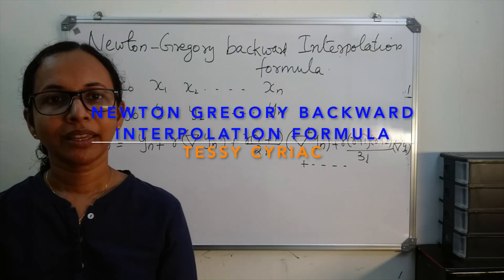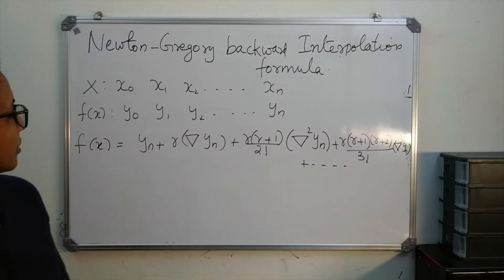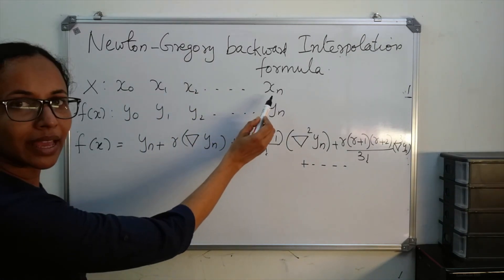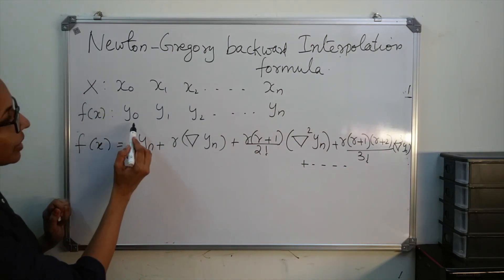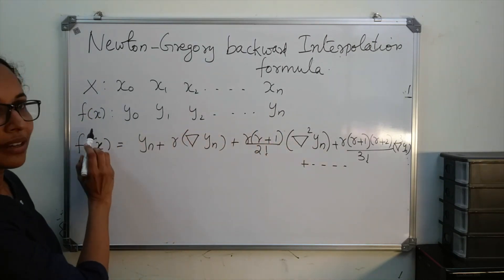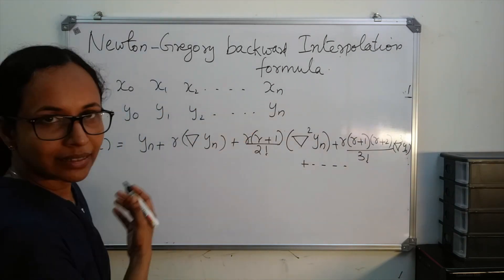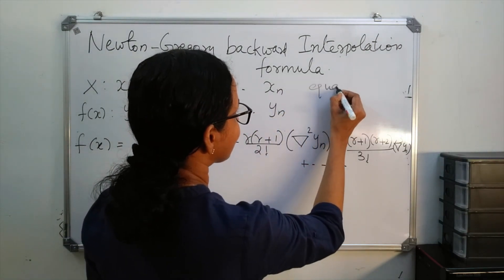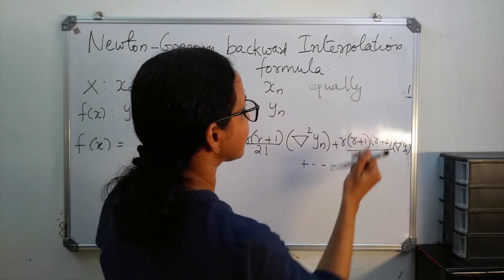I will explain the Newton-Gregory backward interpolation formula. Let x naught, x1, x2, etc., xn be the values of an independent variable x, and let y naught, y1, y2, etc., yn be the values of the function y = f(x) at these values. Also assume that x values are equally spaced with step length h.